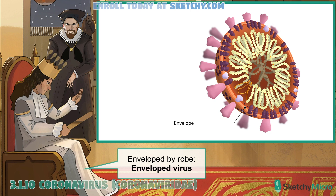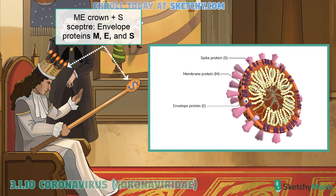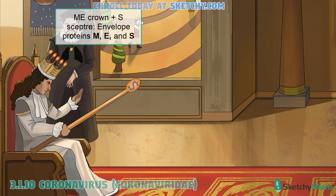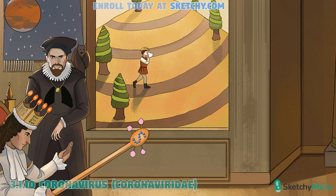The nucleocapsid is surrounded by a viral envelope — coronaviruses are enveloped, meaning they have a lipid bilayer studded with proteins. The coronavirus envelope typically contains three different proteins. The M and E proteins are in the king's crown, and the S protein is on his scepter. The protruding portion of the S-protein is heavily glycosylated — these large, widely spaced glycosylated knobs, or peplomeres, give coronaviruses their crown-like appearance. But these spikes are far from decorative: they're responsible for entry into host cells, including receptor binding and membrane fusion.